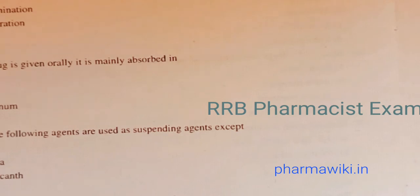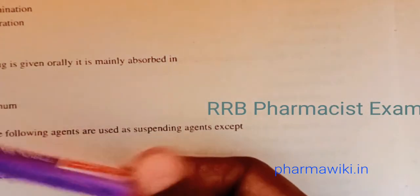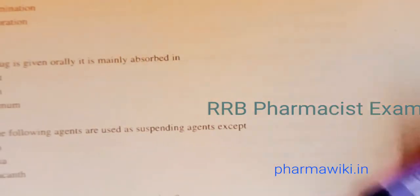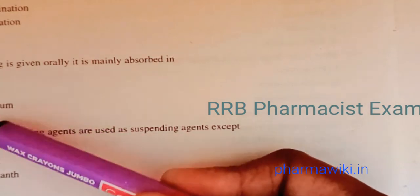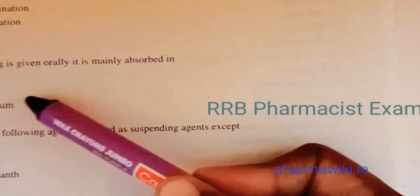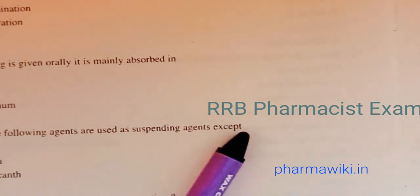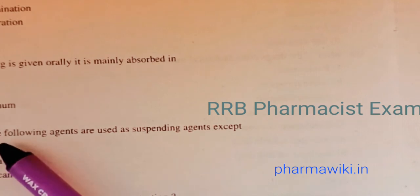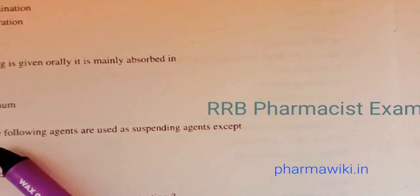Question 22: Preservatives are used to prevent contamination and also deterioration, so the answer is C, both. Question 23: When a drug is given orally, it is mainly absorbed in the duodenum. Question 24: All of the following agents are used as suspending agents except starch — the answer is starch.